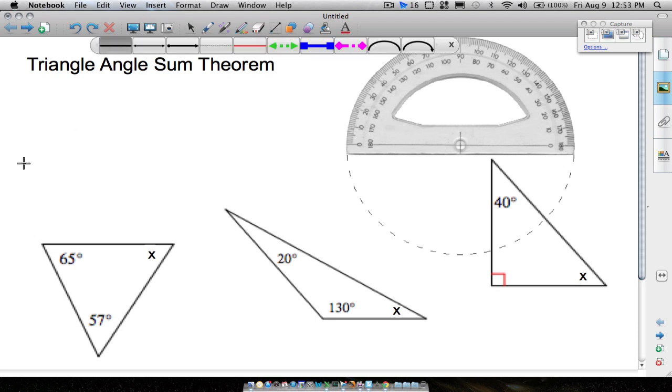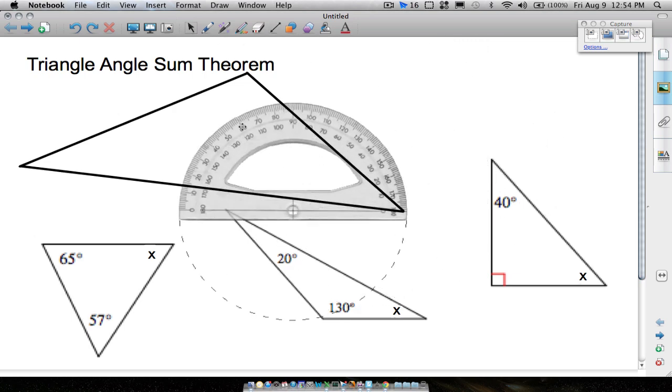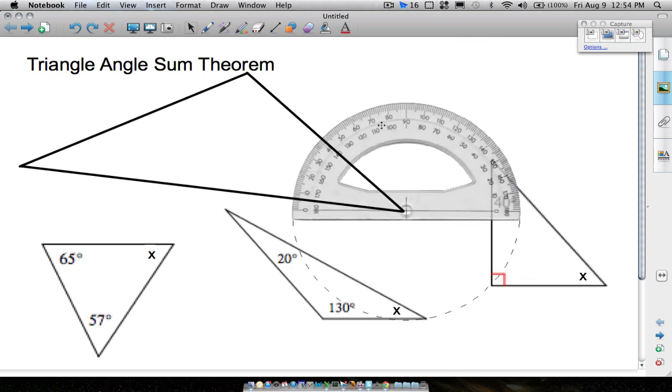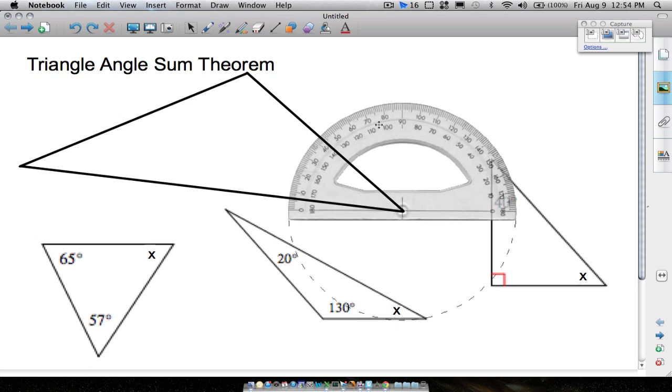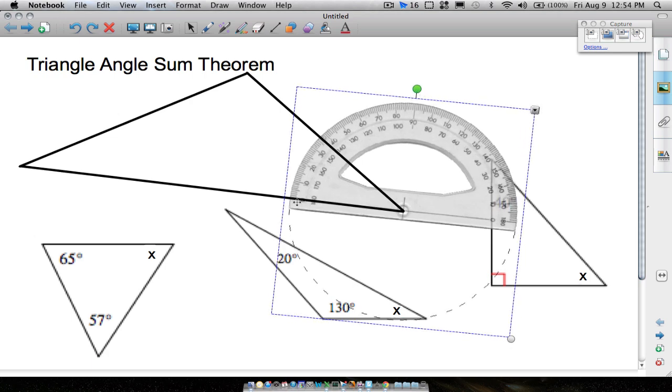But before we do that, I'm going to draw a triangle real quick, just making it totally random. And let's use this protractor and find all three of these angles in the triangle. So what I'm doing is lining up the center point here on the protractor, and then we want to rotate the protractor to where we can line up zero with one of the sides of the triangle.